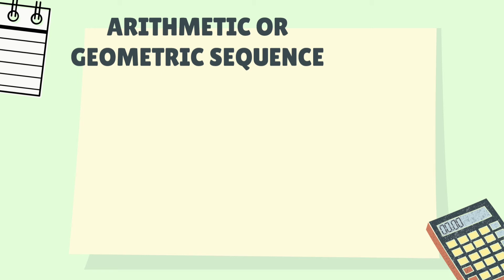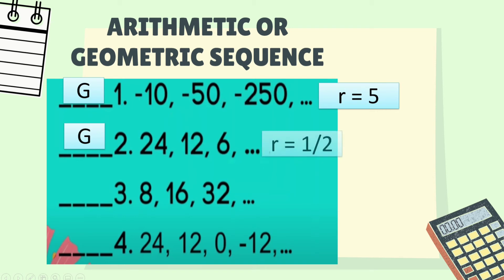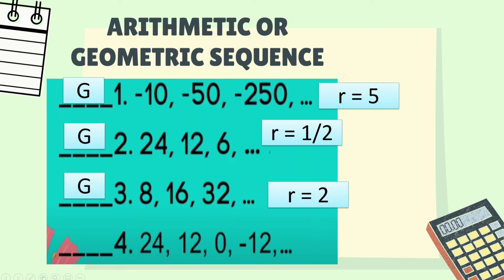Let's determine if the given examples are arithmetic or geometric sequences. Number 1: negative 10, negative 50, negative 250 — that is a geometric sequence because it has a common ratio of 5. Number 2: 24, 12, 6 — this is a geometric sequence with a common ratio of 1 half. Number 3: 8, 16, 32 — also a geometric sequence with a common ratio of 2. Number 4 is an example of an arithmetic sequence because it has a common difference of negative 12.